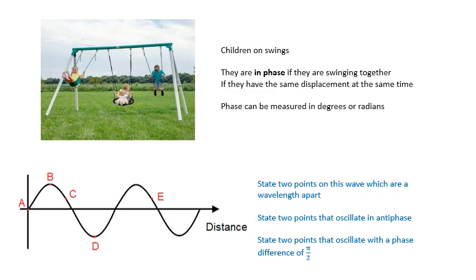Here's a little question — have a think about this. Looking at this graph, identify two points which are a wavelength apart; two points that oscillate in antiphase, so the phase difference is 180° or π; and two points that oscillate with a phase difference of π/2. The answers: C and E are a wavelength apart — a wavelength doesn't have to be from crest to crest; it can be any two points that oscillate in phase. B and D oscillate in antiphase — they do the opposite of each other. And A and B have a phase difference of π/2, which is a quarter of a wavelength.